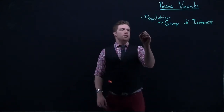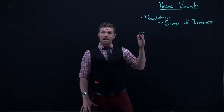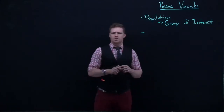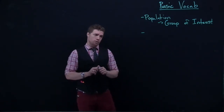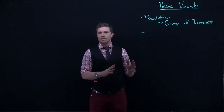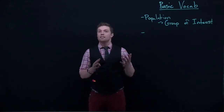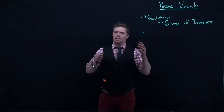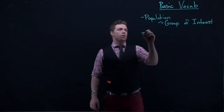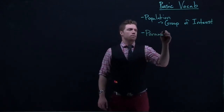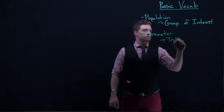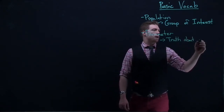From our population, if we were to gather data by looking at every single person in the population — say, going to every teenager in the entire world, showing them the exact same video, and watching their eyes dilate — we could then find out the average amount their eyes dilate. That value would be called a parameter, and we can think of it as a truth about the population.